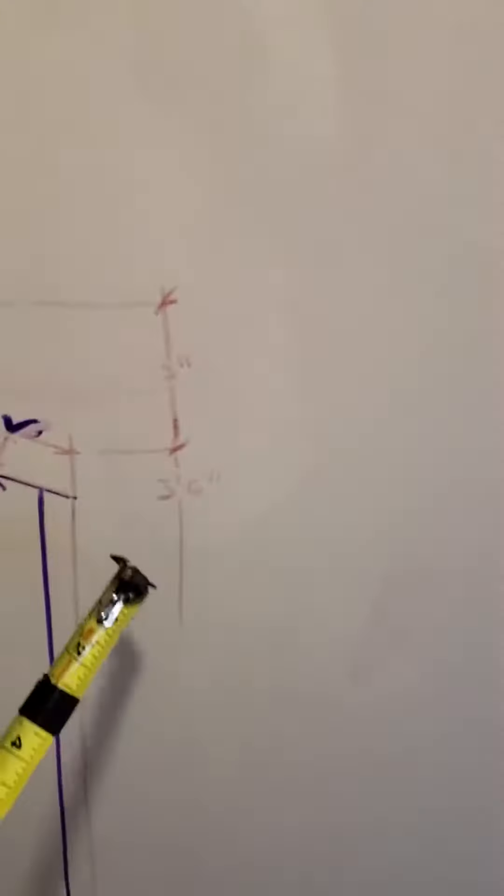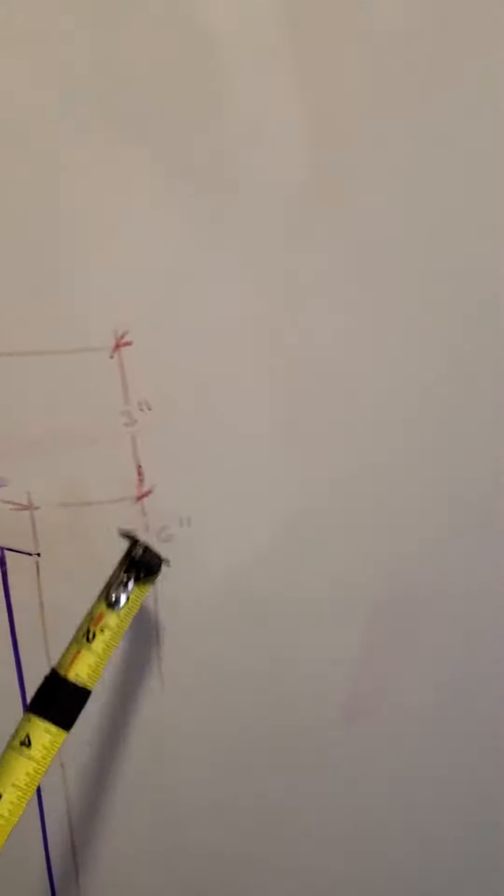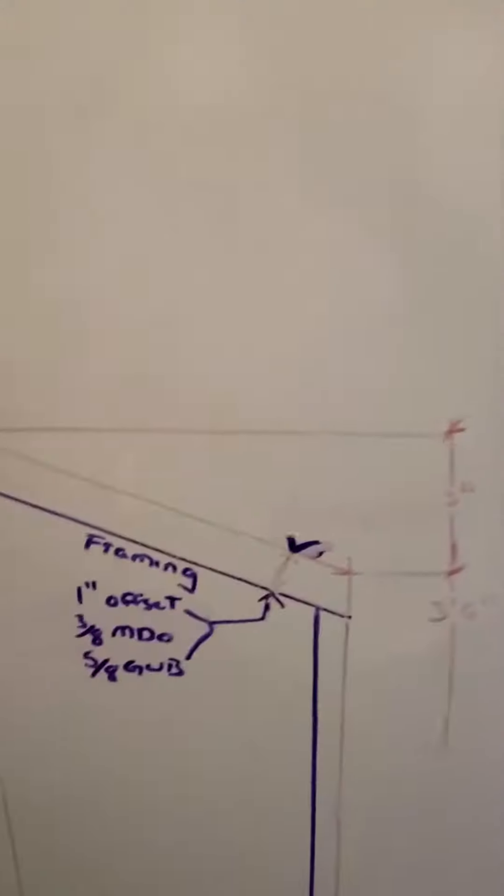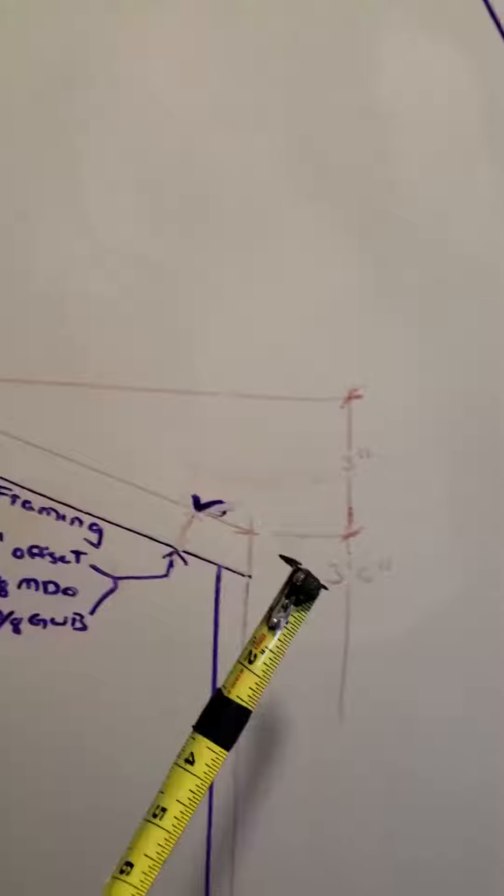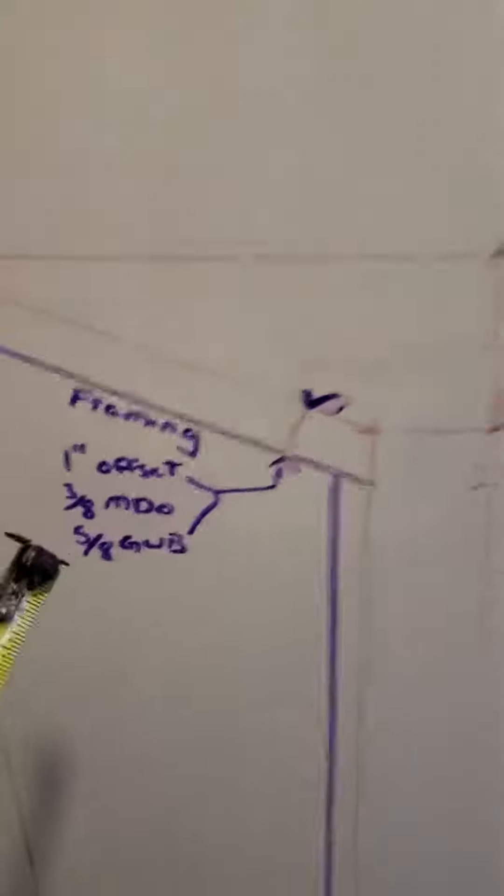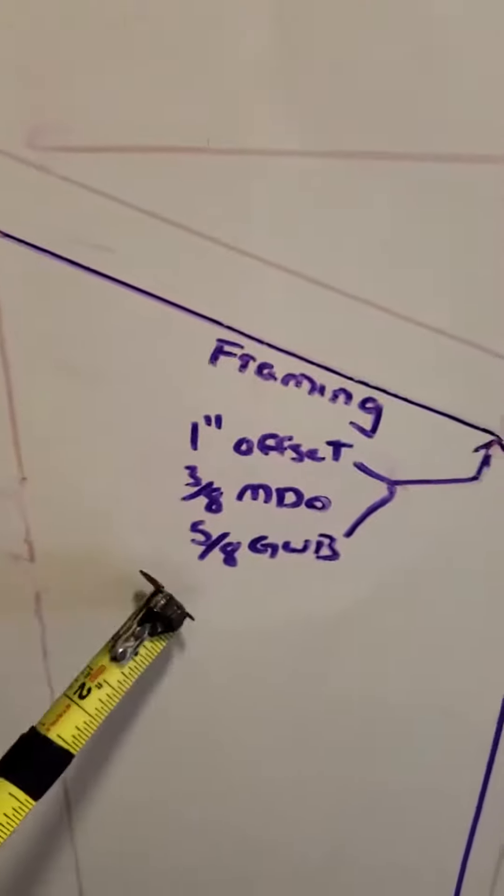So I did do actual numbers here. This is 3'6 off the floor, another 3 inches up. Gives you the top finish and the bottom finish. And then as it showed, 3-8 MDO, 5-8 drywall, gives you a 1-inch offset.